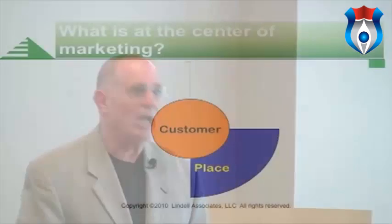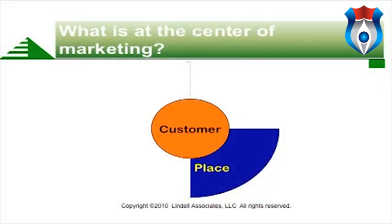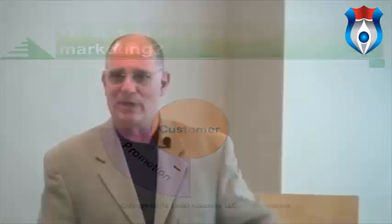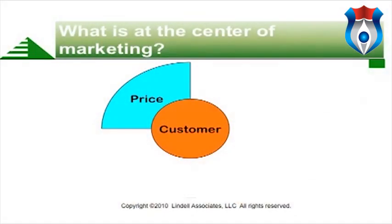Products should be customer-driven, not technology-driven. Place is another P — it simply refers to how you get the product from your place to the customer's place, or whether they come to you. It's distribution. Promotion is what tells people that you have a new product or service and how to get it. And then there's the final important P — price — what the customer is going to pay. Notice all of these point toward one thing: the customer.